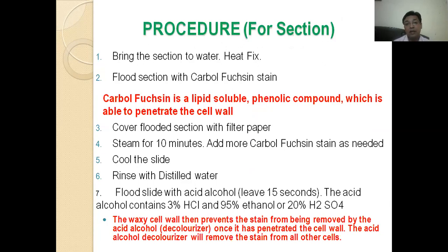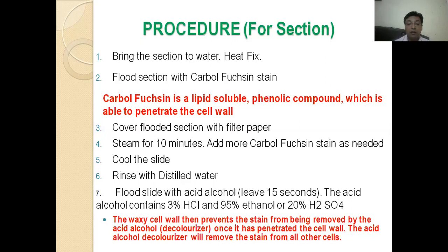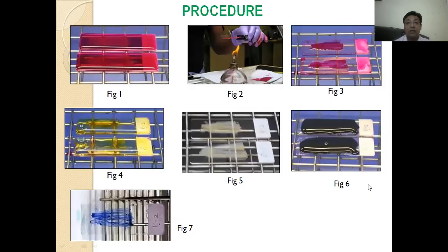Bring the sections to water and heat-fix them. Then flood the section with carbol fuchsin stain — carbol fuchsin is a lipid-soluble phenolic compound which is able to penetrate the cell wall. Cover the flooded smear section with filter paper and steam for 10 minutes. Add more carbol fuchsin if required, then cool the slide and rinse with distilled water. Flood the slide with acid alcohol for 15 seconds. Acid alcohol is made by 3% HCl and 95% ethanol. The waxy cell wall prevents the stain from being removed by the acid alcohol once it has penetrated the cell wall; the acid alcohol decolorizer will remove the stain from all other cells.